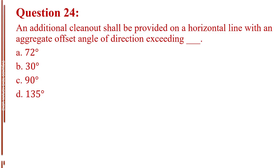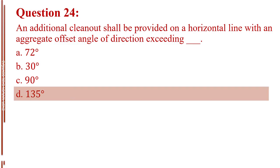Question number 24. An additional cleanout shall be provided on a horizontal line with an aggregate offset angle of direction exceeding blank. Letter A, 72 degrees. Letter B, 30 degrees. Letter C, 60 degrees. Letter D, 135 degrees. The answer is Letter D, 135 degrees.